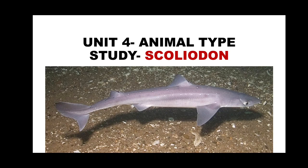Scoliodon is a shark, commonly called as dogfish. It is commonly called dogfish because sharks have a very well-developed sense of smell. This sense of smell is also called olfaction, so their olfactory sense is highly developed. That's why Scoliodon is called the Indian dogfish.